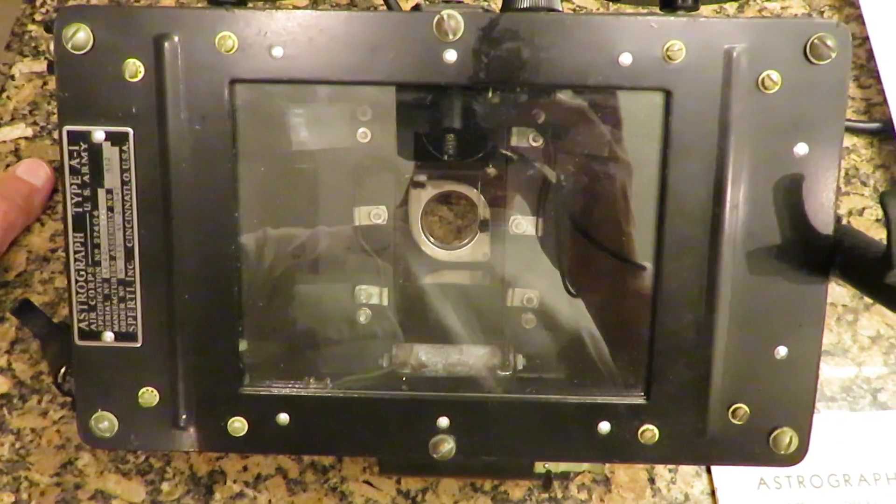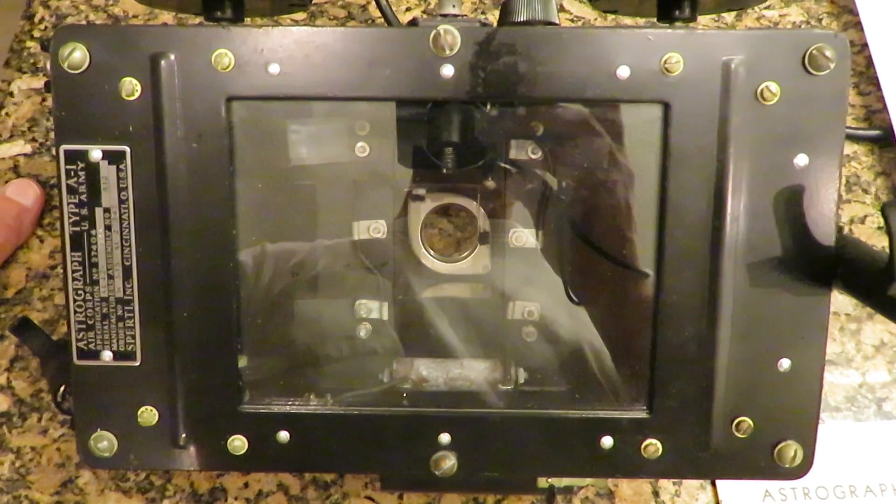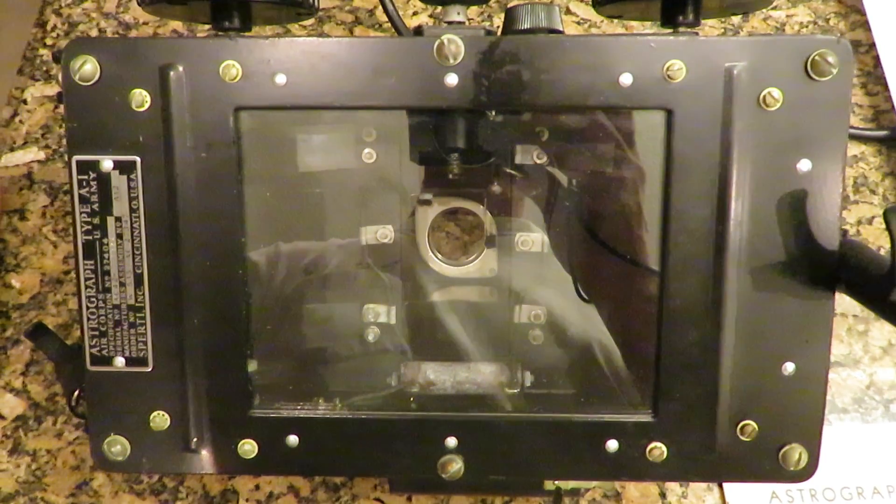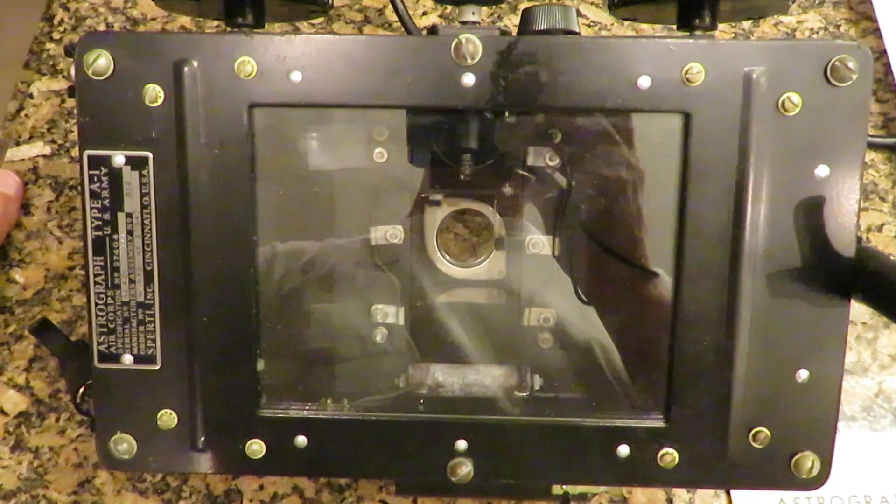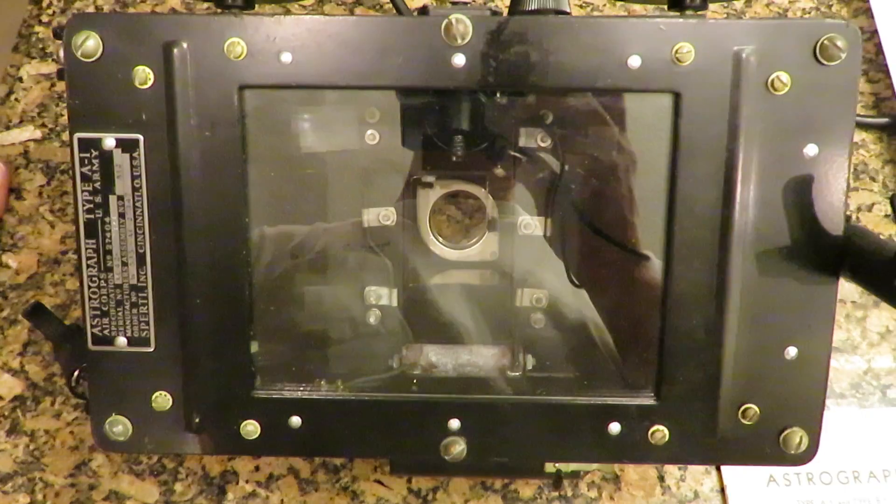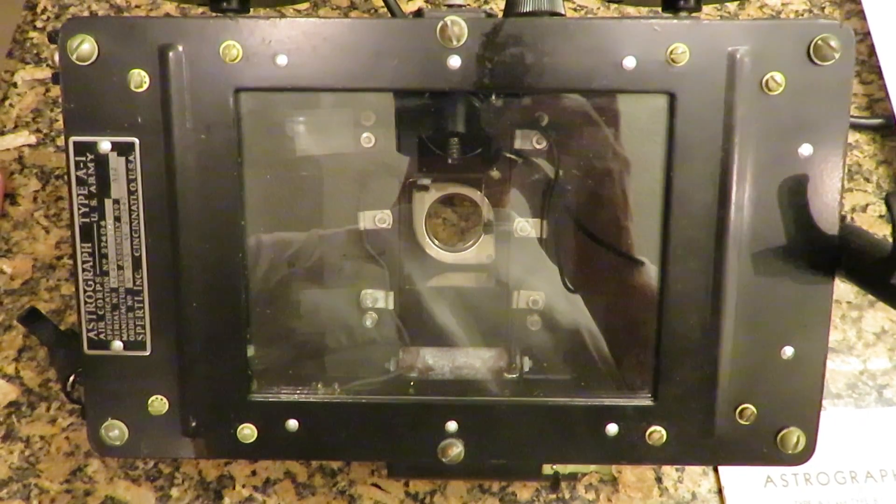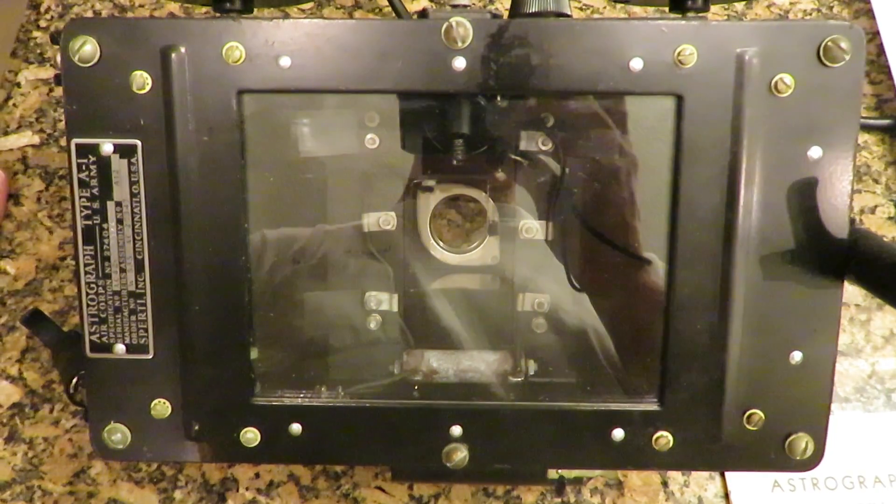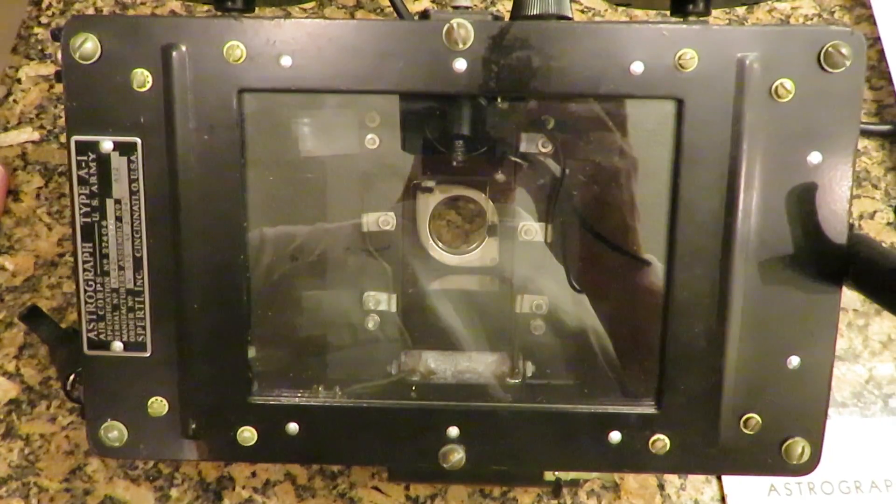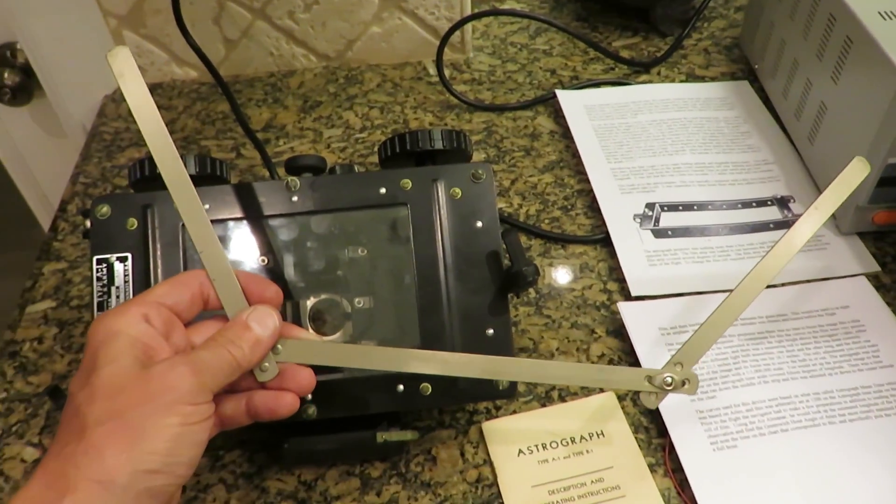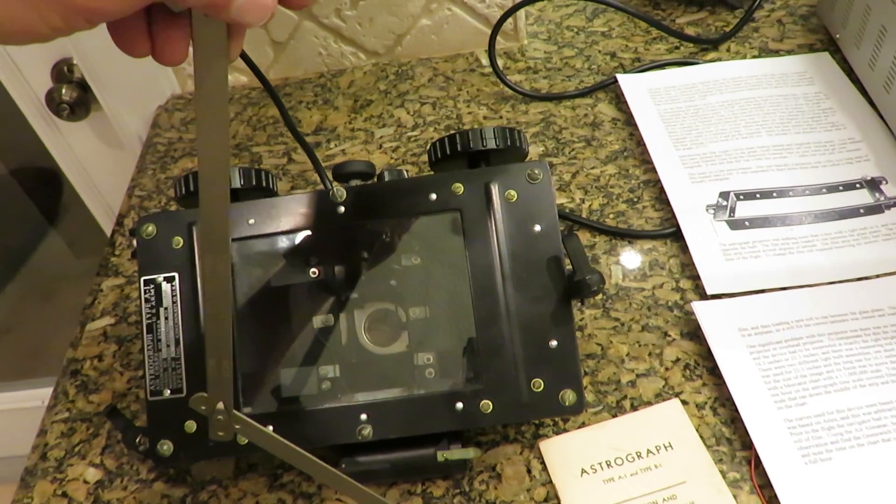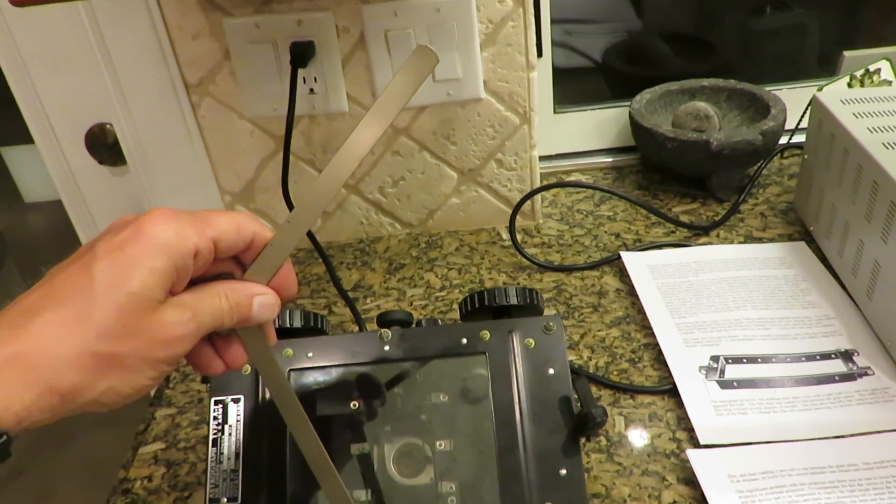One significant problem with this projector was that there was no lens to focus the image like a slide projector, and I am somewhat mystified as to why there was no mechanism to focus the image and light. To compensate for this, the curves on the film were very precise, and the device had to be suspended at exactly the right height above the navigator's table, either 16.3 inches or 22.3 inches, and there was a measuring rod to assure that this was done correctly. This is the measuring rod, and when used with just two limbs, it measured 16.3 inches. But when all three limbs were used, it measured 22.3 inches.